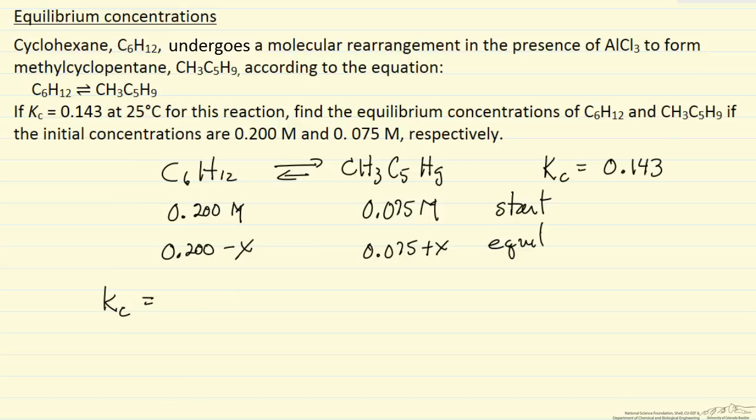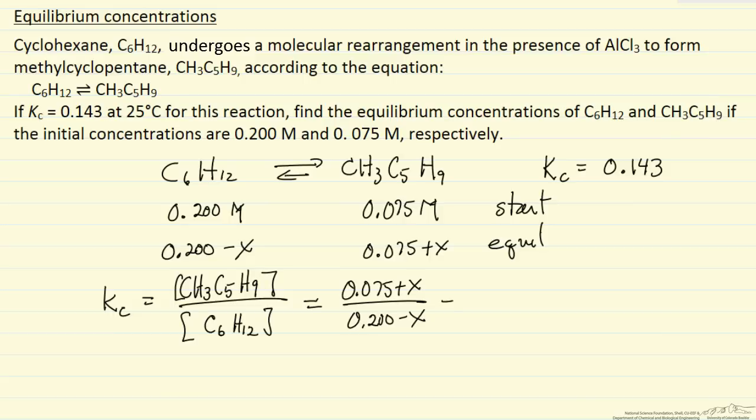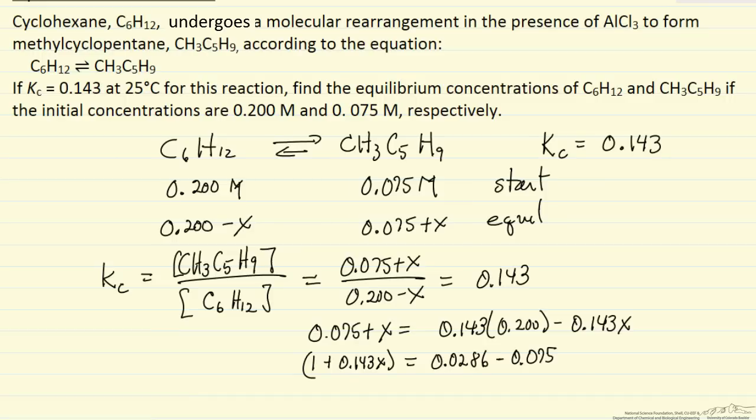At equilibrium, the equilibrium constant equals concentration of product over concentration of reactant, and this is going to be equal to 0.143. So we can multiply through. I've done the multiplication.